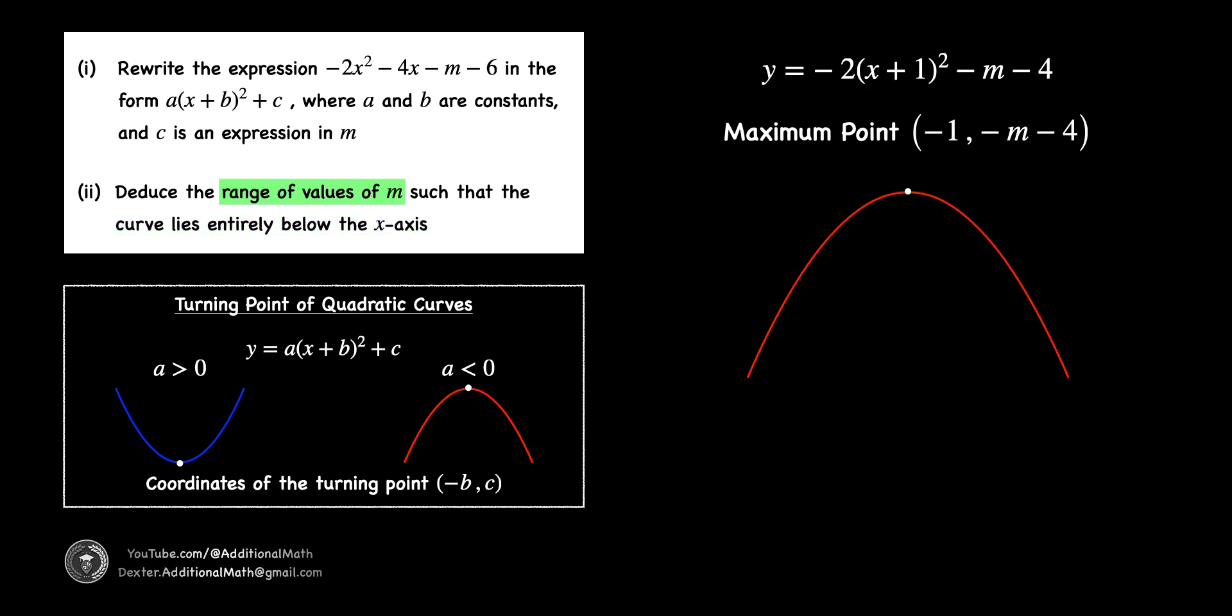For the quadratic curve to be completely below the x-axis, our maximum, which is negative m minus 4, must be less than 0. Because if the maximum is already negative, then any other points on this quadratic curve will also be negative, thus making the curve completely below the x-axis.